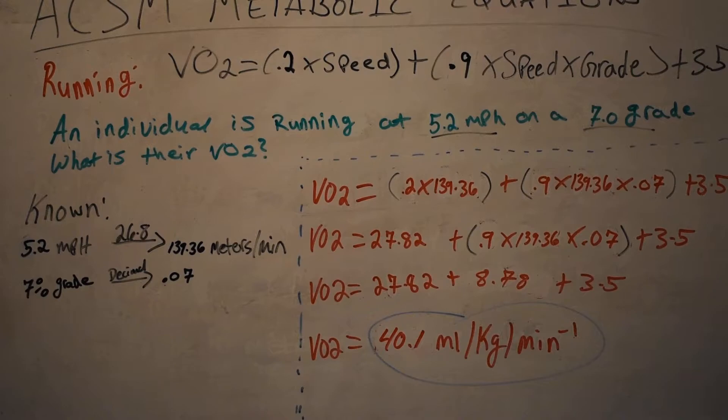Our running equation is VO2 equals 0.2 times the speed. Remember the speed must be in meters per minute, not in miles per hour. To get the speed into meters per minute, you're going to take whatever speed in miles per hour you have and multiply that by 26.8.